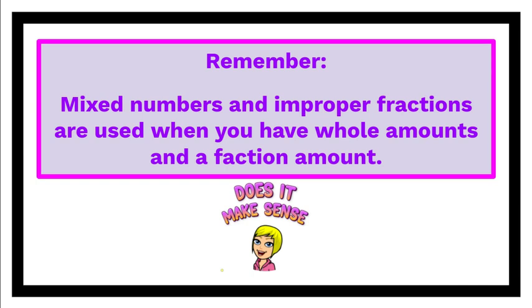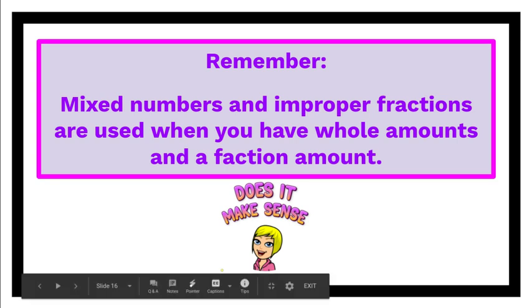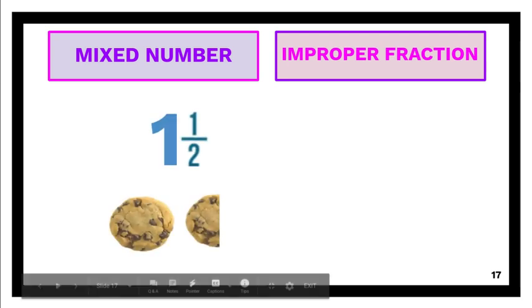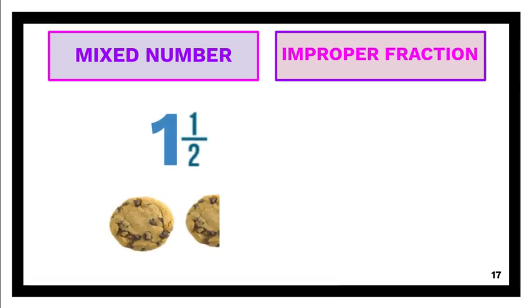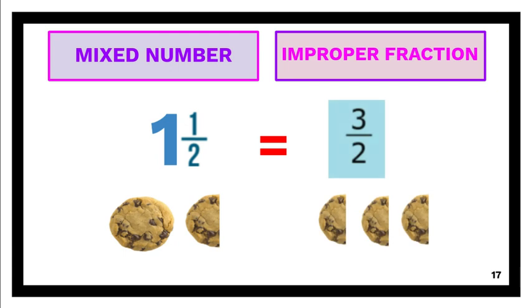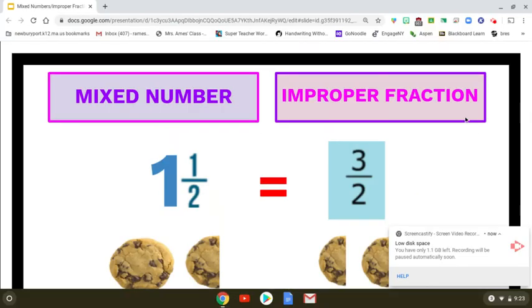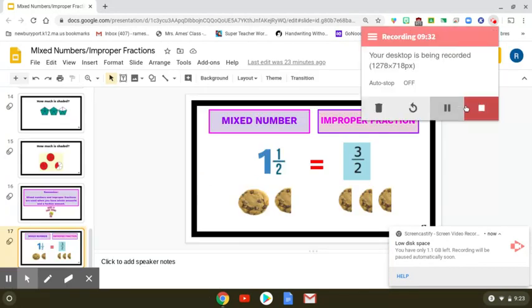Remember that mixed numbers and improper fractions are used when you have whole amounts and a fraction amount. Mixed numbers are like one and a half, and improper fractions are like three halves. So we'll check out your scores and move on tomorrow. We'll see you tomorrow.